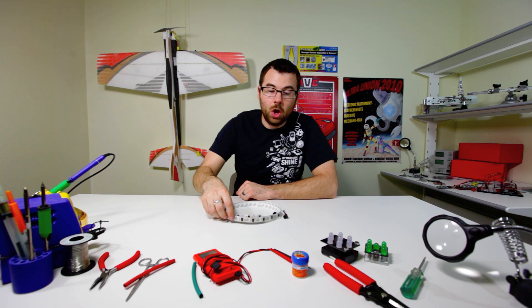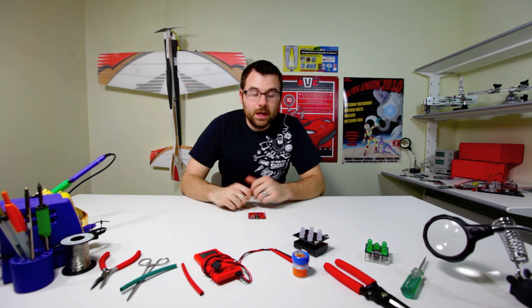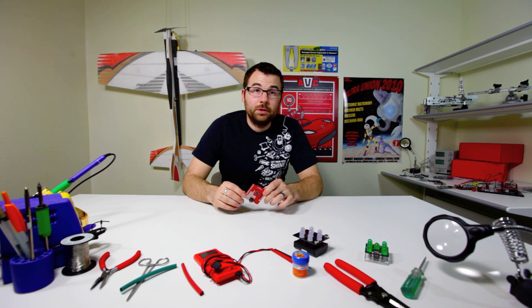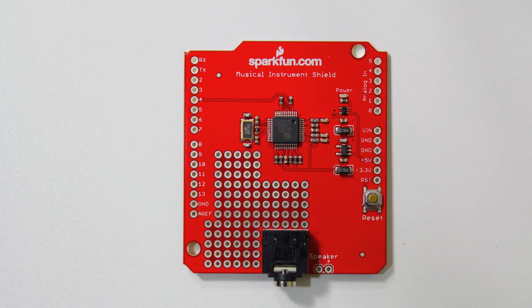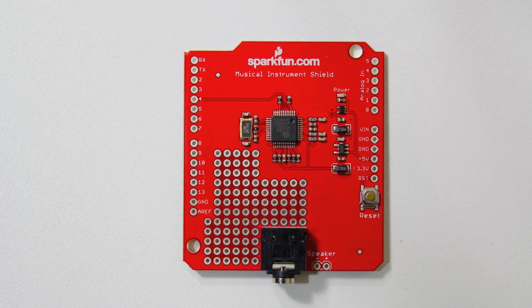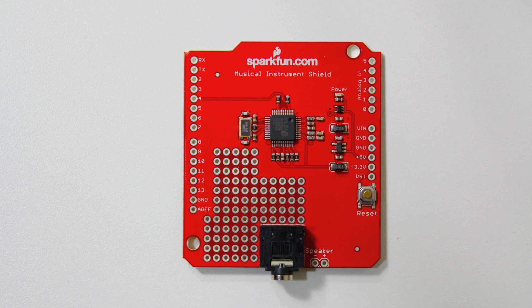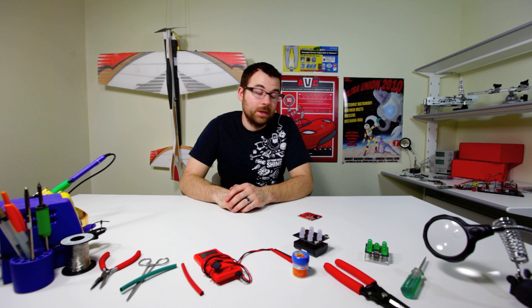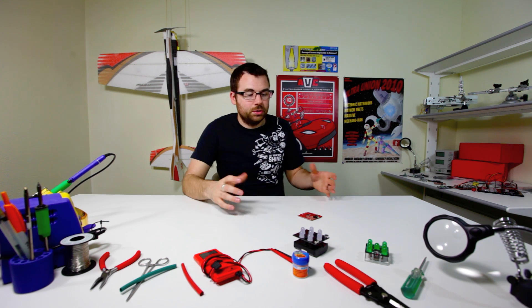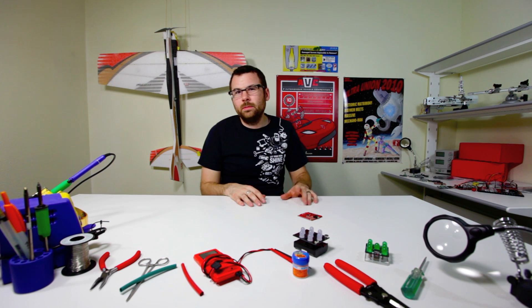Here we have the Musical Instrument Shield. The Musical Instrument Shield uses a VS-1053 IC. That IC has a lot of different functions, but for this board we're just using the MIDI functionality. The MIDI functionality allows you to play all sorts of different instruments,